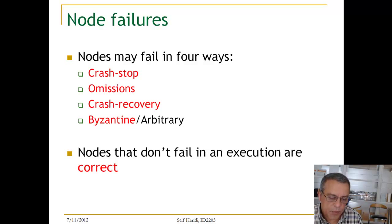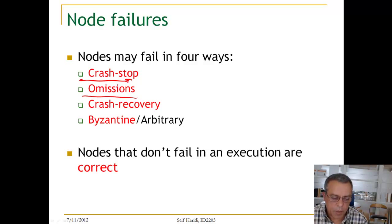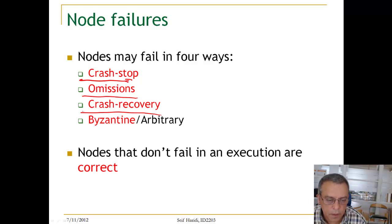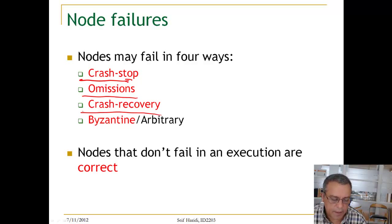There are different types of failure modes. One is called the crash stop model. Another is omission, where a process can omit sending and receiving messages. Then there is the crash recovery model, where a process crashes and later recovers and joins the same session of the algorithm. The most general failure model is Byzantine failure, where a process can fail in an arbitrary way.